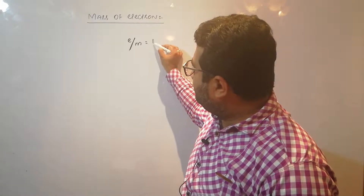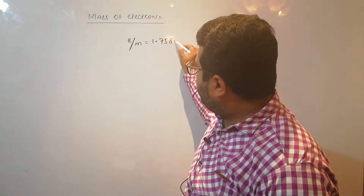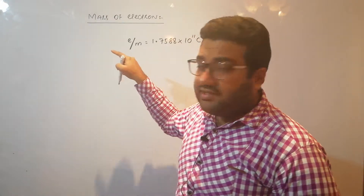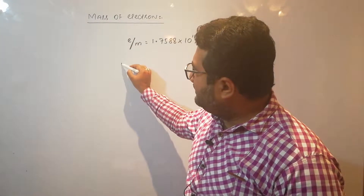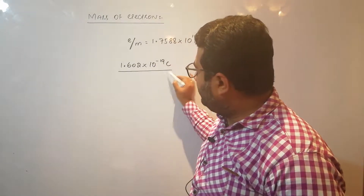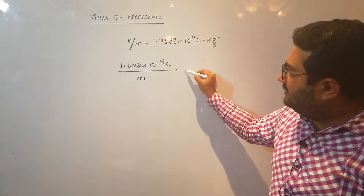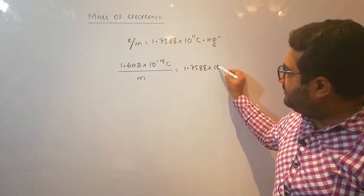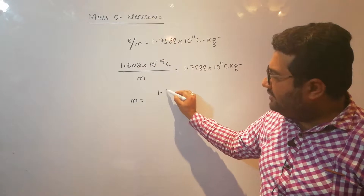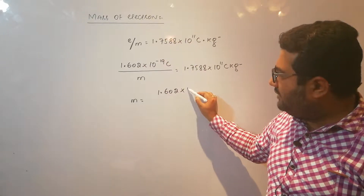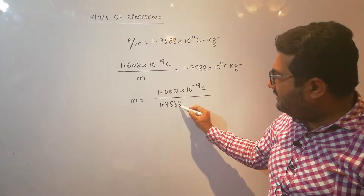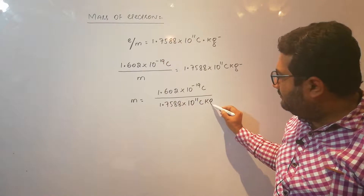We know that e/m is equal to 1.7588 × 10¹¹ coulombs per kg. Now the charge of electron is also known: 1.602 × 10⁻¹⁹ coulombs. Dividing charge by mass gives 1.7588 × 10¹¹ coulombs per kg, so the mass should be equal to 1.602 × 10⁻¹⁹ coulombs divided by 1.7588 × 10¹¹ coulombs per kg.